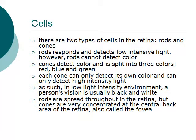There are two types of cells in the retina: rods and cones. Rods respond to and detect low-intensity light. However, rods cannot detect color. Cones detect color and are split into three types, each representing one of three colors.